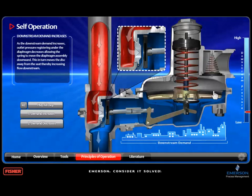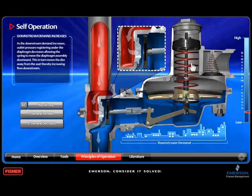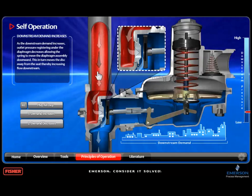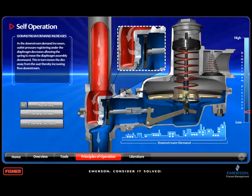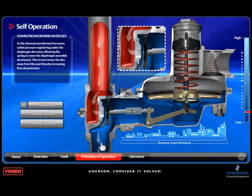Shown here is one of Fisher's commercial service regulators. As a direct operative regulator, this device's purpose is to reduce a high inlet pressure shown here in red down to a steady outlet pressure shown in blue, so that the downstream equipment at your facility will run safely and efficiently.